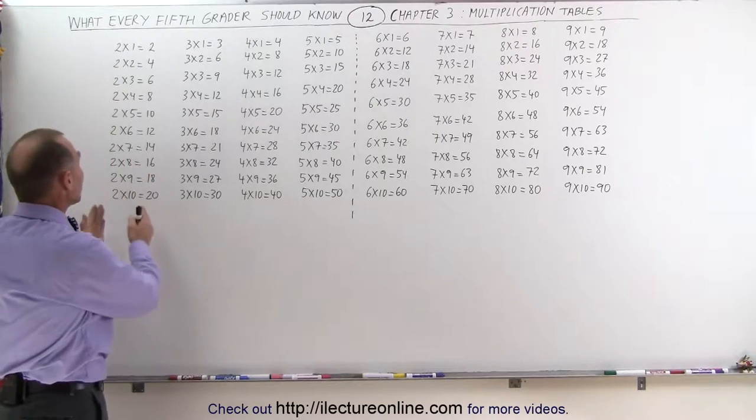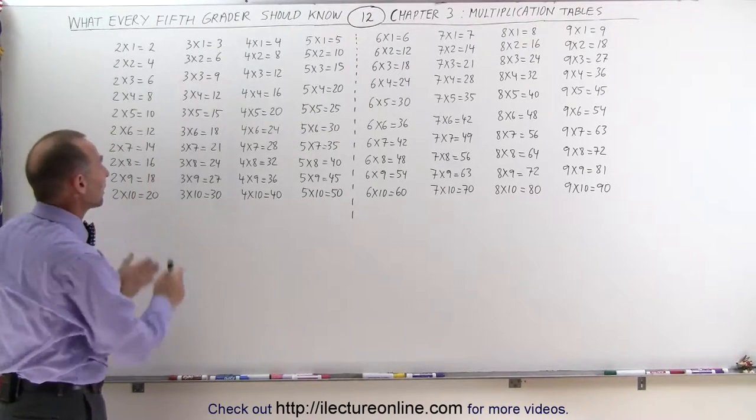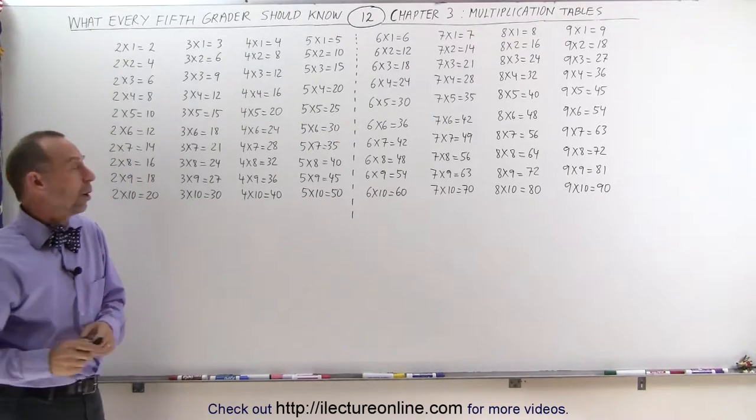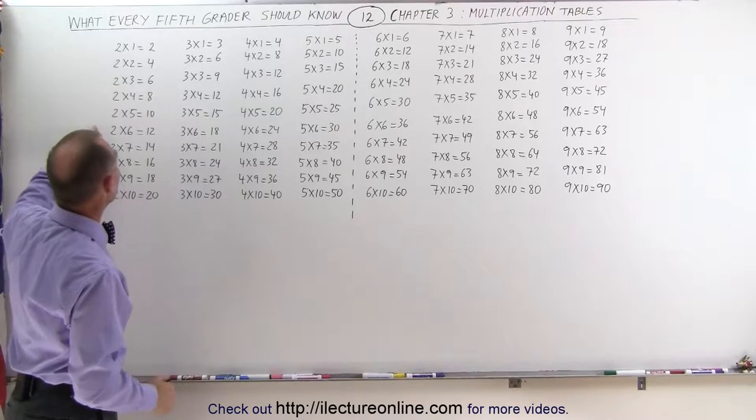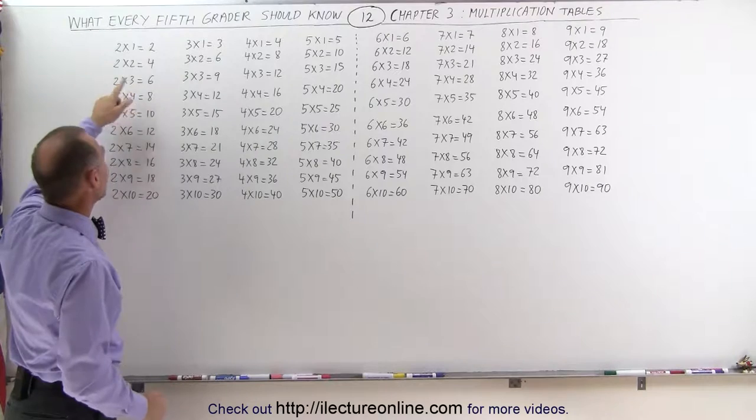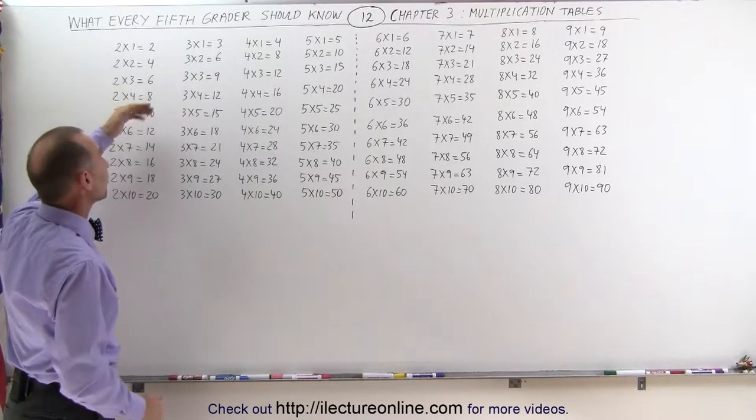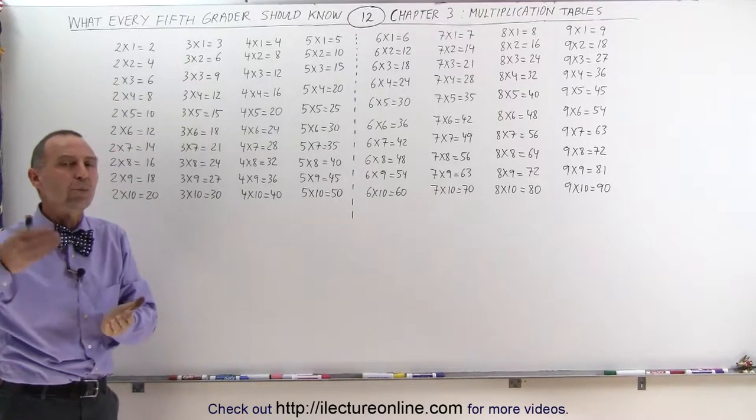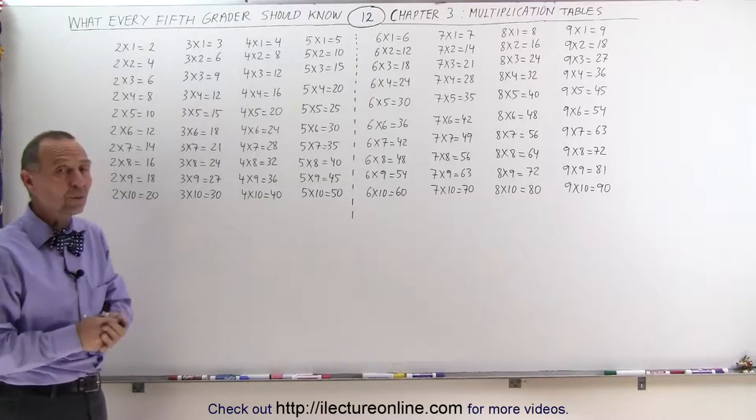When you start with the first few right here, multiplying times 2 and multiplying times 3, those are not that hard, because in the case of multiplying times 2, you simply add 2 to every answer. So 2 times 1 is 2, 2 times 2 is 4, 2 times 3 is 6, and so forth, so the pattern is readily recognizable and easy to remember.